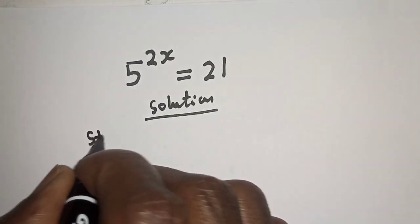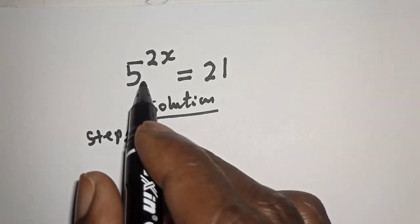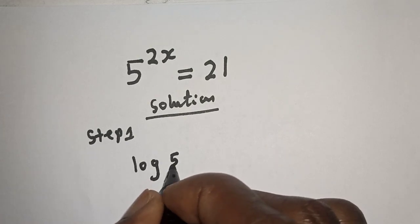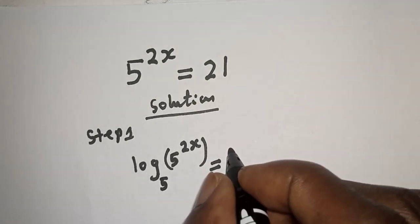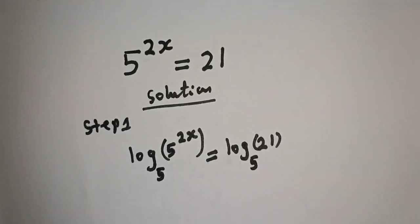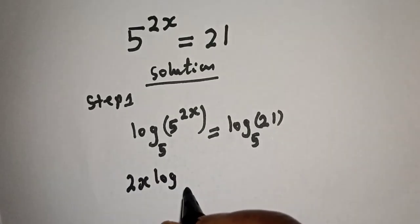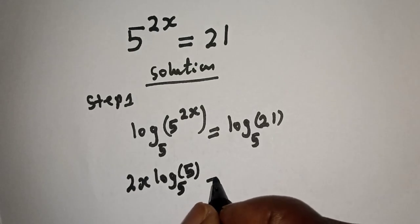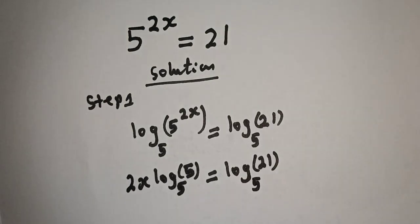Let's start with step 1. Let's take the log of both sides with base 5. That is, log of 5 raised to power 2x, base 5, is equal to log 21 base 5. And here, 2x times log 5 base 5 is equal to log 21 base 5.